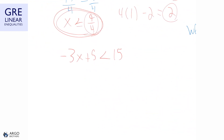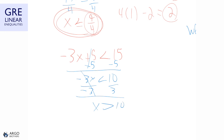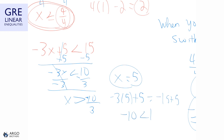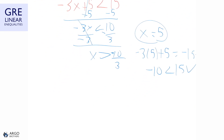Now let's solve negative 3x plus 5 is less than 15. Subtract 5 from both sides to get negative 3x is less than 10. Dividing by negative 3 requires flipping the sign, so x is greater than negative 10 over 3. Let's verify: if x equals 5, then negative 3 times 5 plus 5 equals negative 15 plus 5, which is negative 10, and that is less than 15 — it works.